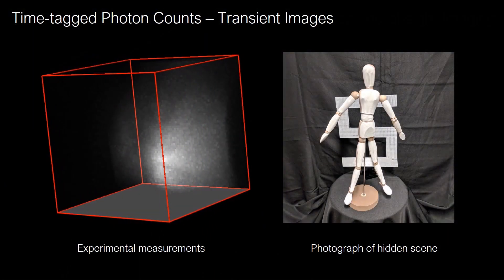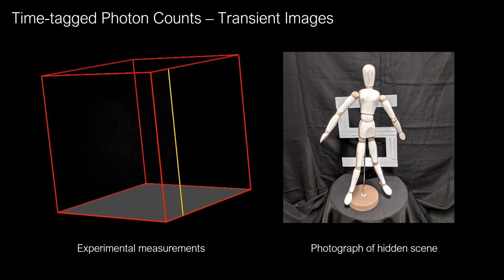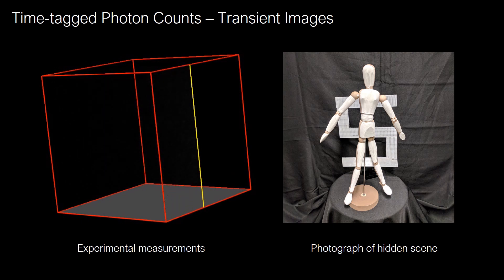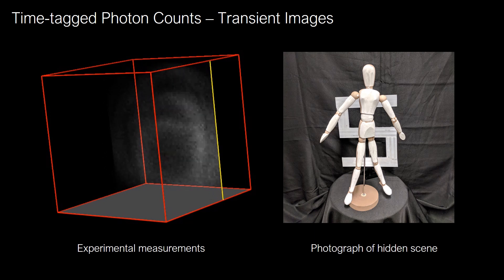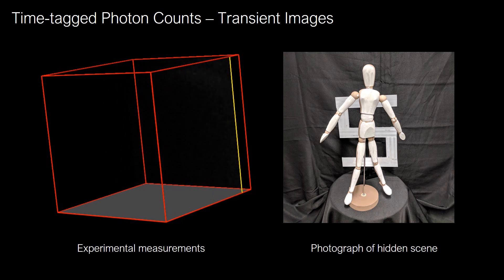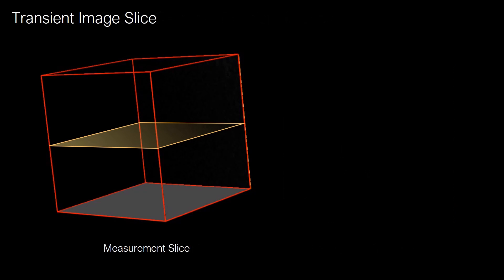Here you see temporally resolved measurements of the indirect light transport corresponding to the scene on the right. These time-tagged photon histograms are known as transient images. Here you see a vertical slice of the measurement.